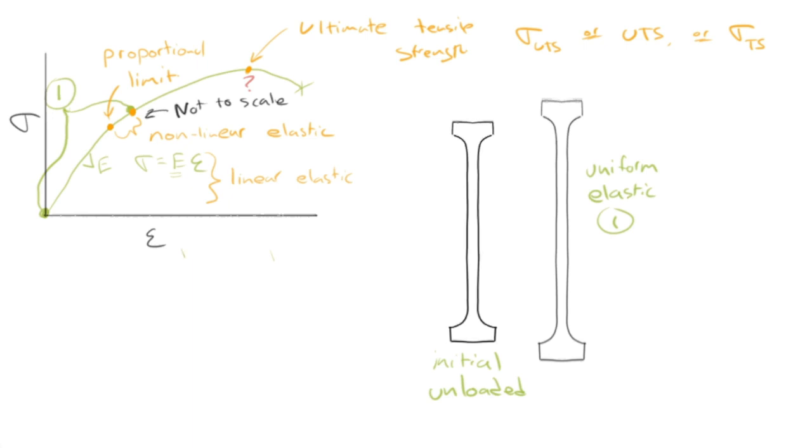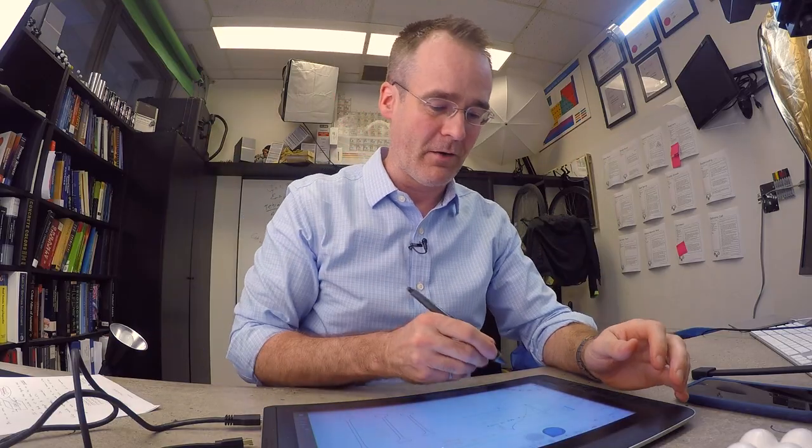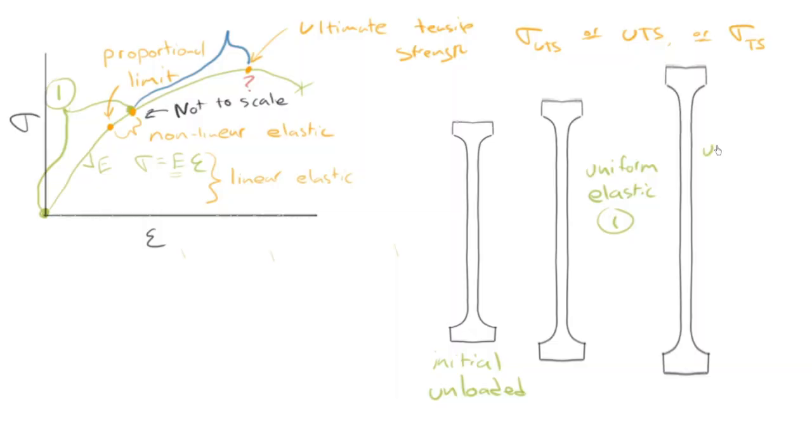What if I continue to load beyond that? I'm going to stretch it even more. Now what I'm trying to describe is what's happening in this region here. It's starting to plastically deform, it's permanently deforming. The sample is permanently getting longer, but it is still uniform. Uniform plastic. I'll call that 2, and I'll identify that over here as 2.